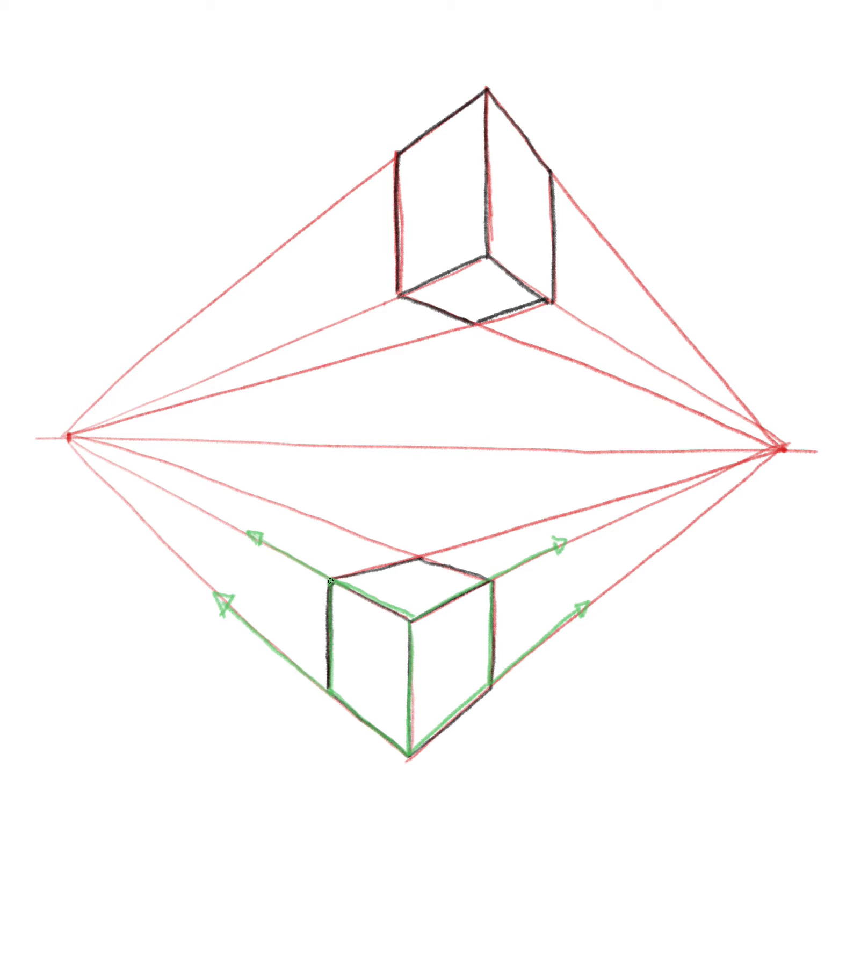However, once we get to this point, the understanding to connect to that point is not fully clear. And what we get is sometimes people do this and that starts to mess up your perspective. So really what you want to know is these back corners here, you see this corner and this corner, we'll say this is side A and this is side B. So side A connects over here to side A and side B connects over here to that.